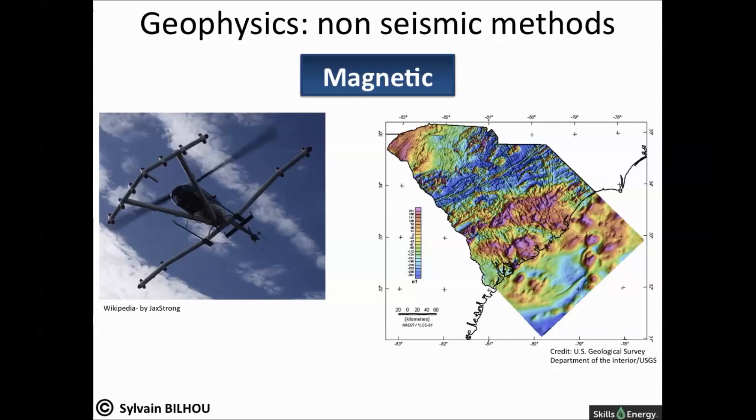Magnetic prospection is also used for frontier exploration. It is a geophysical method based on the examination of magnetic field anomalies of the earth caused by non-similar magnetization intensity of rocks.